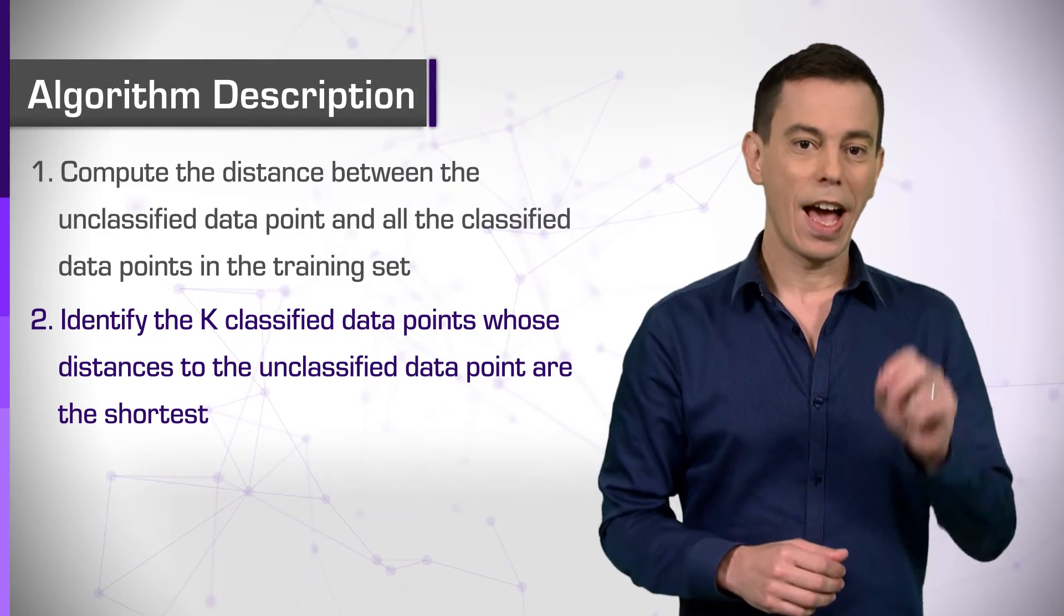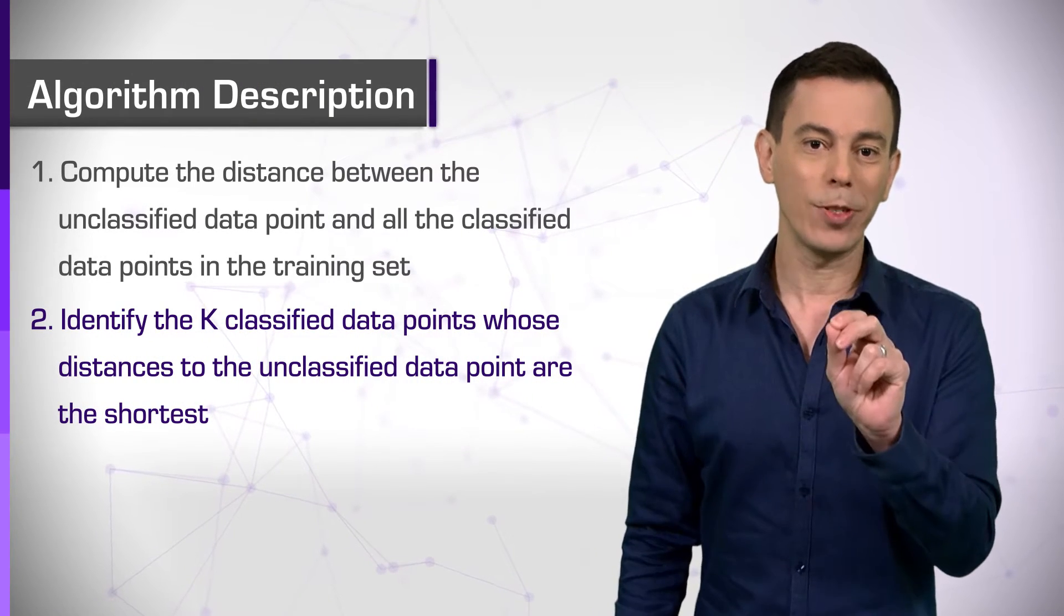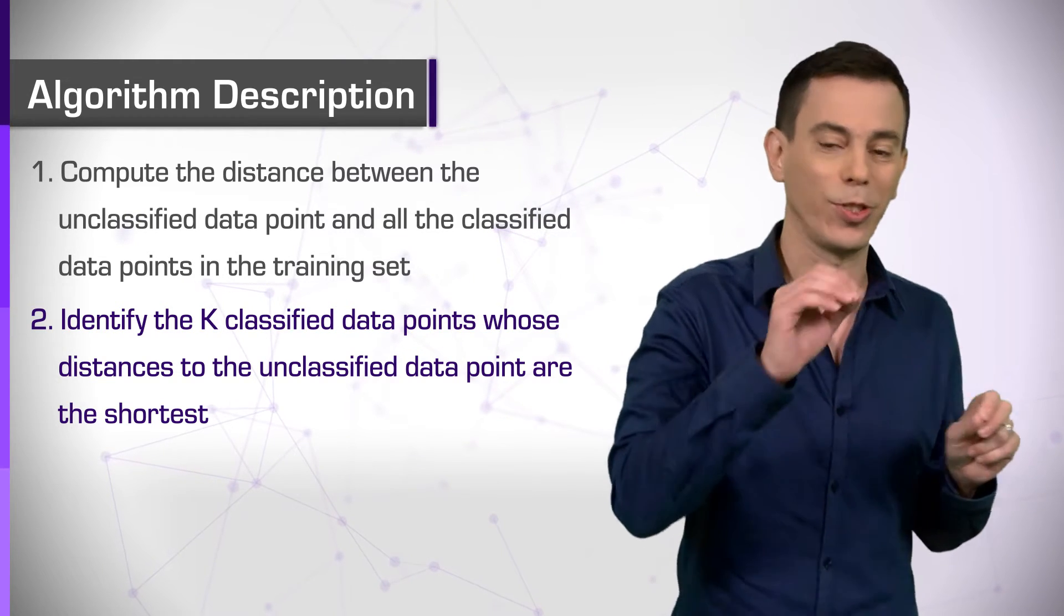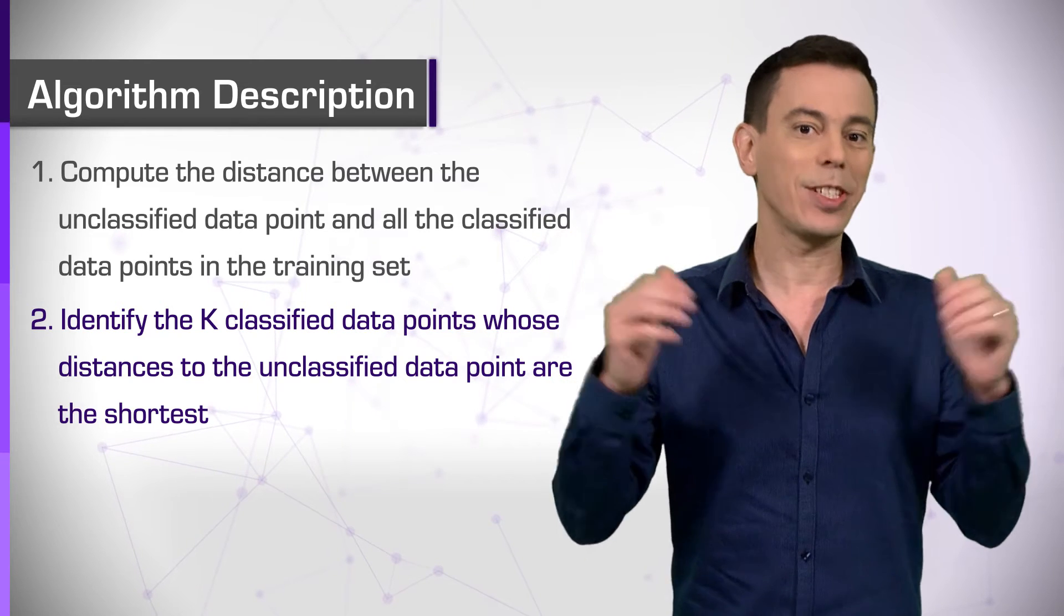Step 2. Identify the k-classified data points whose distances to the unclassified data point are the shortest. These are the k-nearest neighbors.